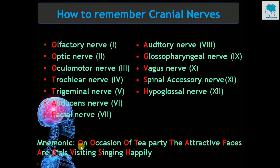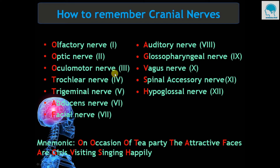The mnemonic is: 'On the occasion of tea party the attractive faces are girls visiting singing happily here.' The first O stands for olfactory nerve, the second O stands for optic nerve, the third O stands for oculomotor nerve, and T stands for trochlear nerve.